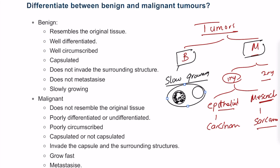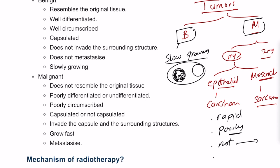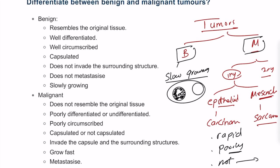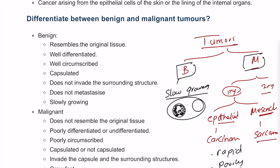Malignant tumors are the complete opposite: they are rapidly growing, poorly differentiated, not well-circumscribed, sometimes capsulated and sometimes not, and they both invade surrounding structures and metastasize to distant areas.